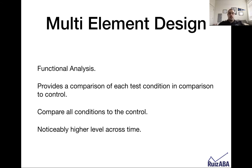What you're looking for is level across time. In a traditional analog assessment, similar to what Iwata and colleagues developed, you would have 10 sessions per condition. Let's say you have four conditions — three tests and a control. You would do all 40 sessions and then look to see which ones have a noticeably higher level than the control.